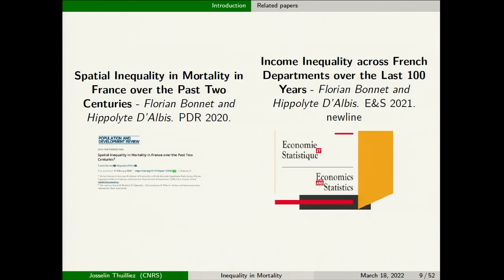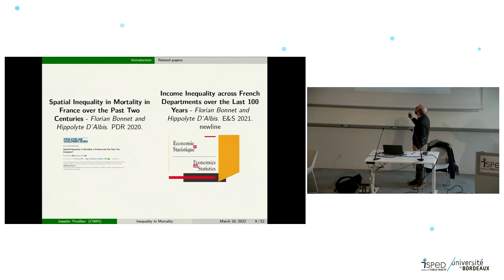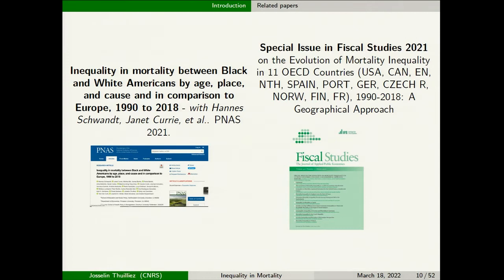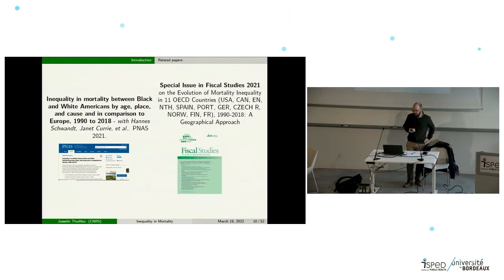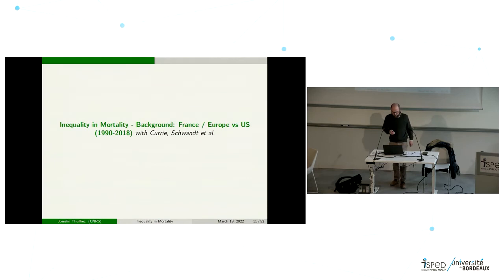I will also draw on papers from my colleagues Hippolyte Dalby and Florent Bonnet from INED and Paris School of Economics, which analyze spatial inequality over time in France over long periods combining income and mortality data. I will discuss the PNAS paper we published at the end of 2021 analyzing inequality in mortality between Black and White Americans in the US in comparison with Europe, which was also published in a special issue of Fiscal Studies in 2021.